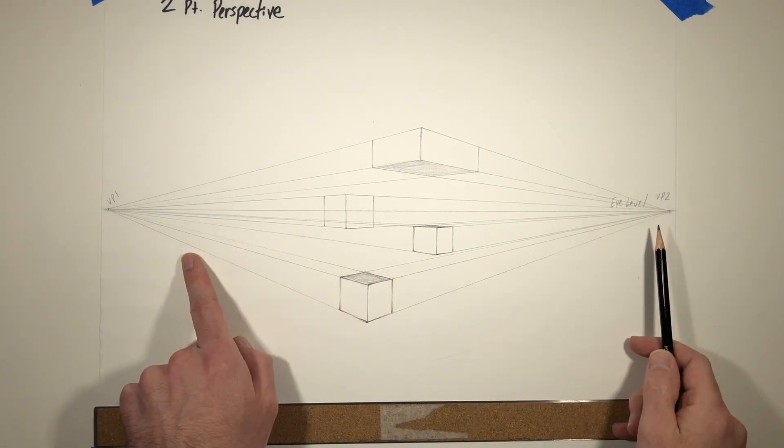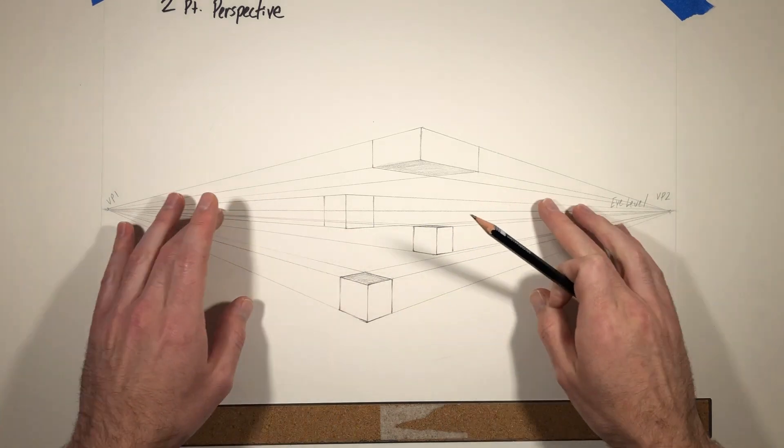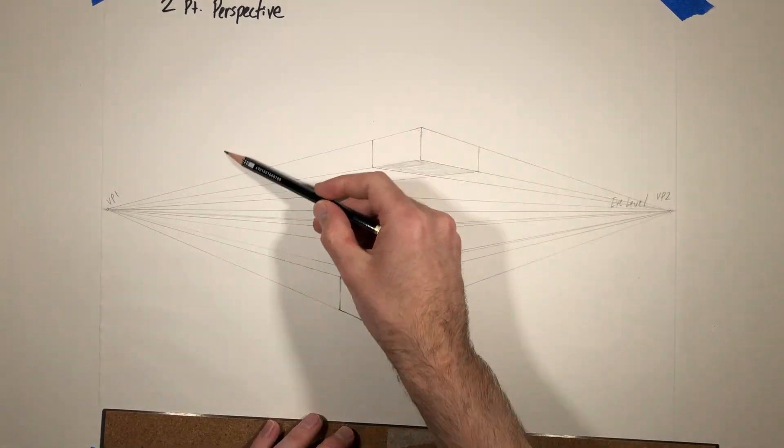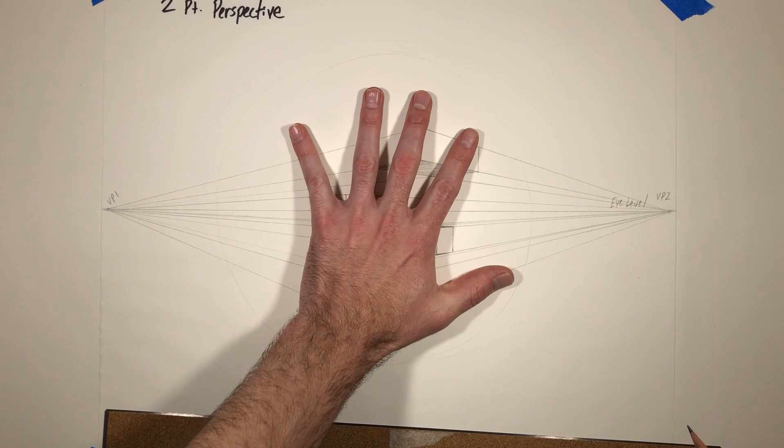So remember set those vanishing points wide, focus your boxes more in your cone of vision which is going to be kind of in a nice centered circle right here in the middle.